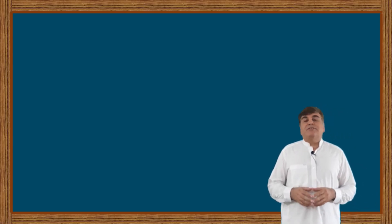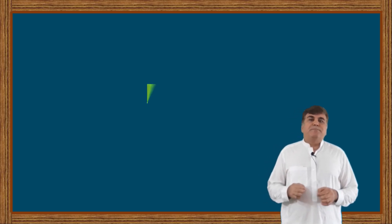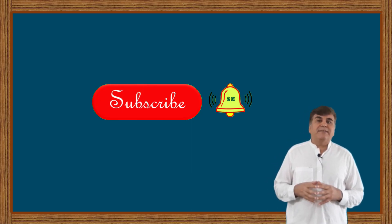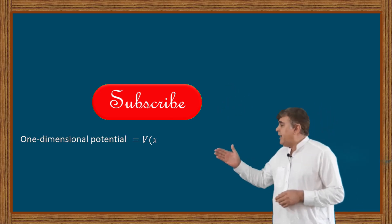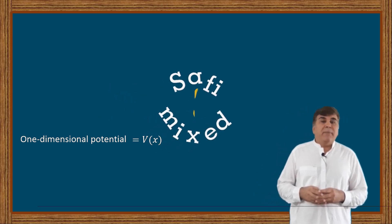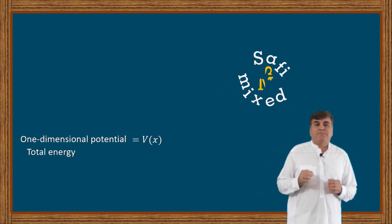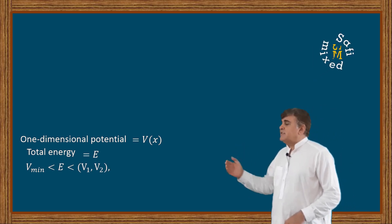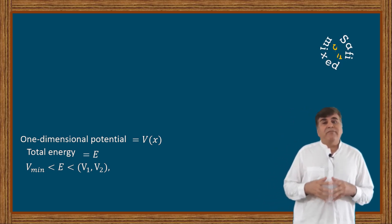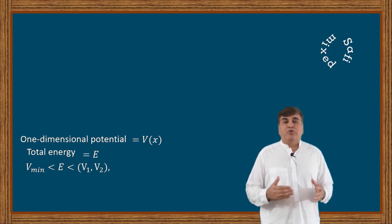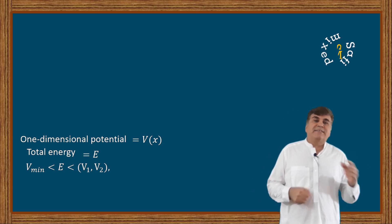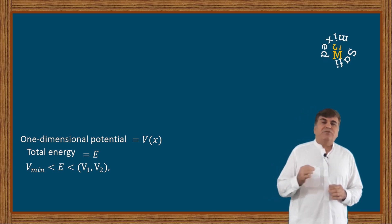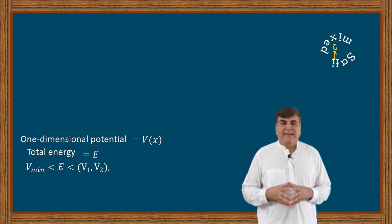Welcome to Safi Mixed. In this video you will learn about the properties of bound states. From the video Part 1 on bound states, we know that for a bound particle the one-dimensional potential V(x) has at least one minimum such that the total energy E is bounded as: V_min ≤ E ≤ V1 and V2, where V1 and V2 are the asymptotic values of the potential on the left and right sides respectively. If you are not clear about this concept, I suggest you watch my video Part 1 on bound states.